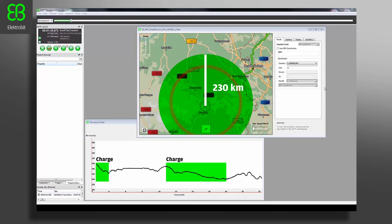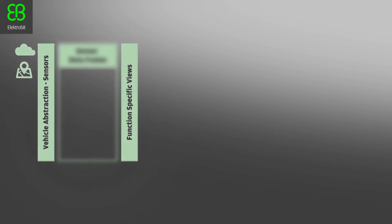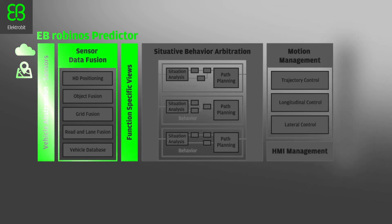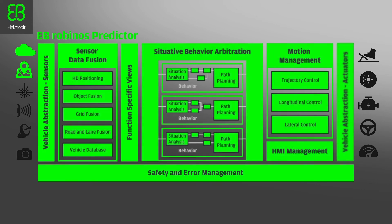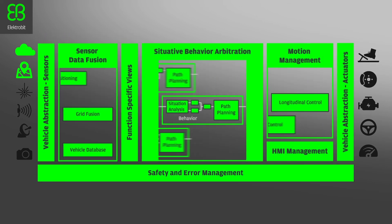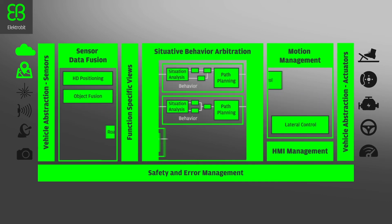Electrobit's comprehensive product EB Robynos Predictor enables and improves numerous popular ADAS functions, and is part of EB Robynos — the reference software architecture for highly automated driving. EB's architecture allows you to mix and match software modules for highly automated driving systems up to SAE Level 5.